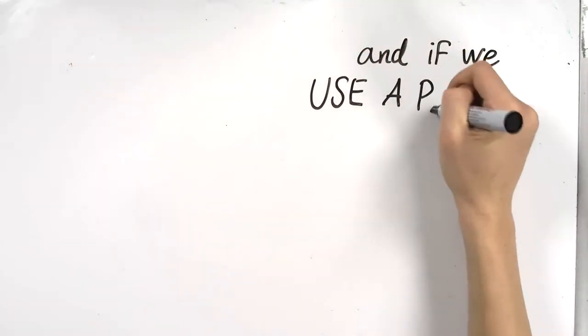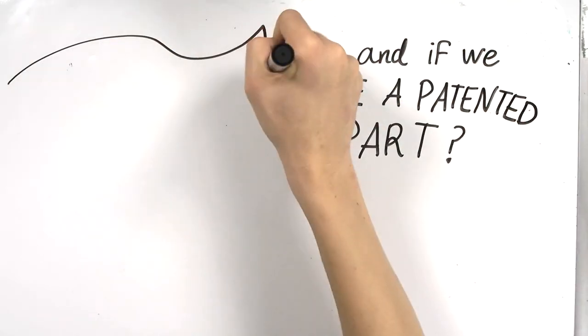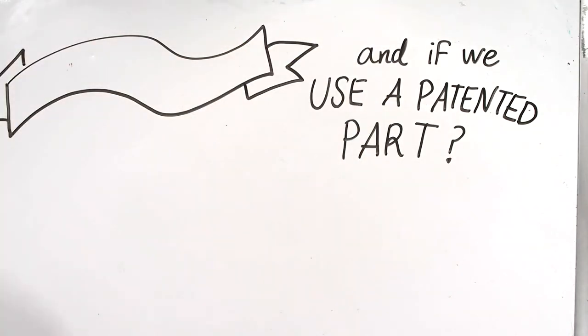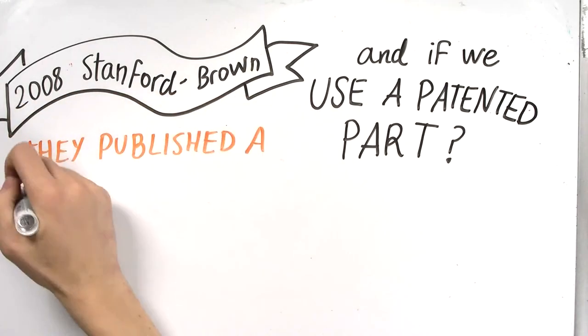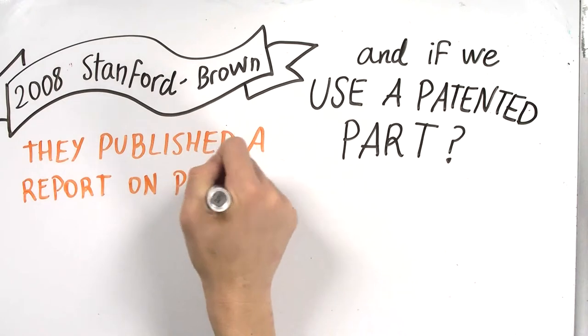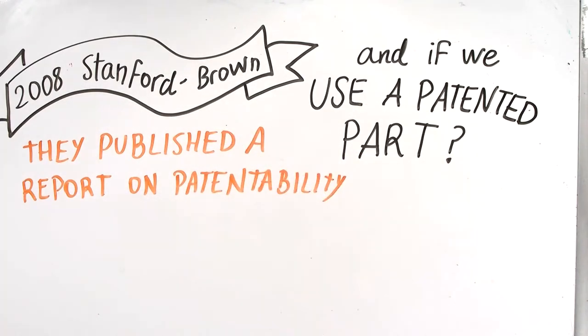Another common situation iGEMers in the past have run into is how to use a patented part. In 2008, the Stanford-Brown iGEM team had to face such a situation. Frustrated by the confusing situation, they organized the information and published a report on patentability related to iGEM.